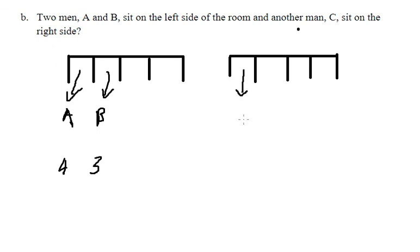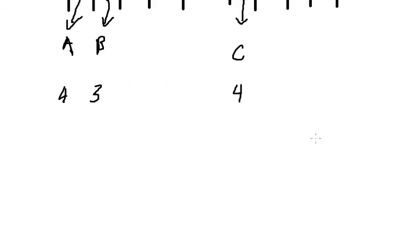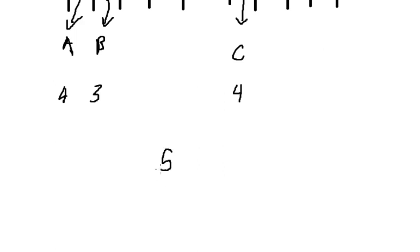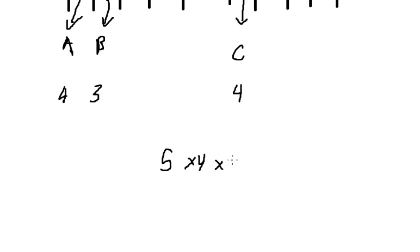For C, we select 1 out of 4, so we have 4. Now we have 3 men left. In this situation, we have 5 remaining slots. So we have 5 for the first man, 4 for the second one, and 3 for the last one. We multiply these 6 numbers together.